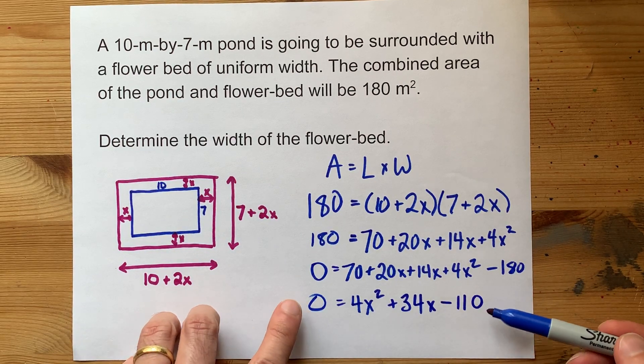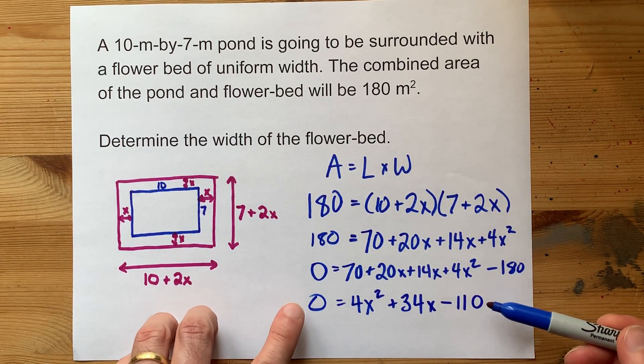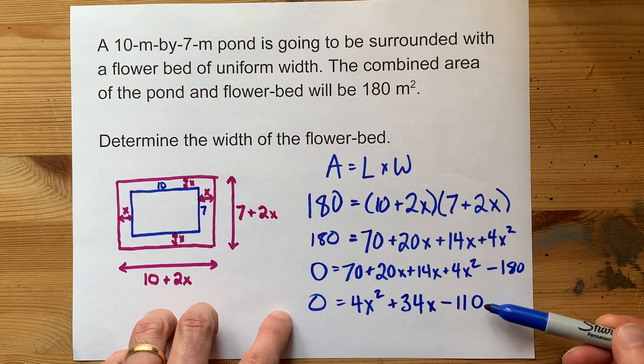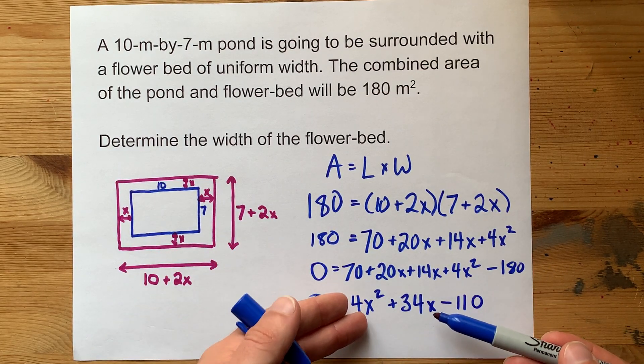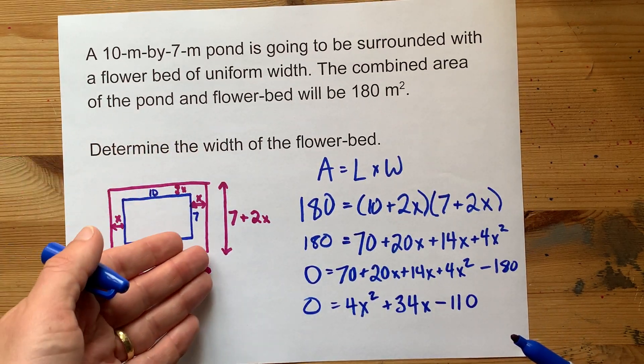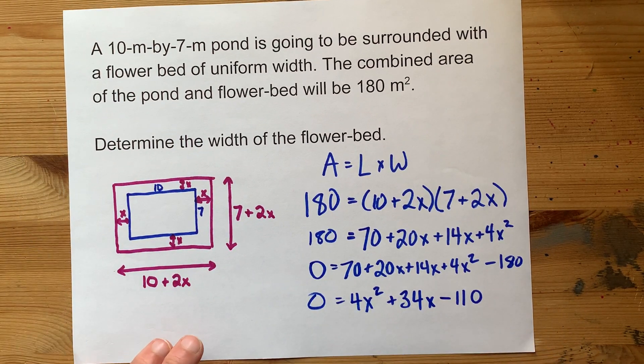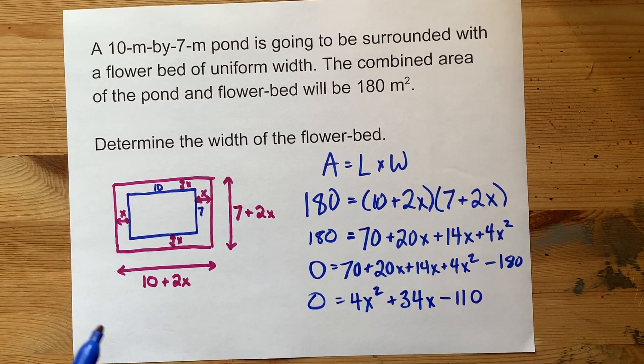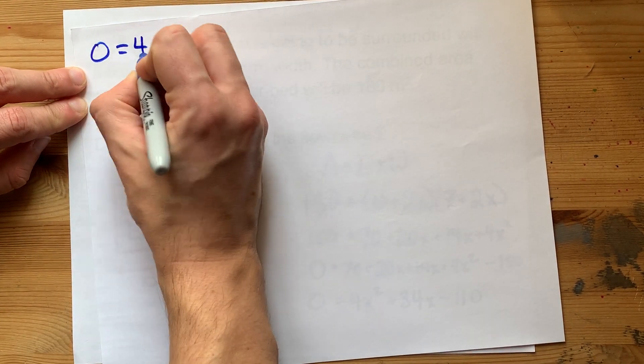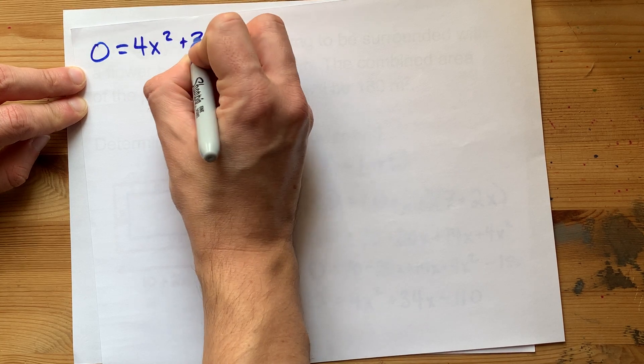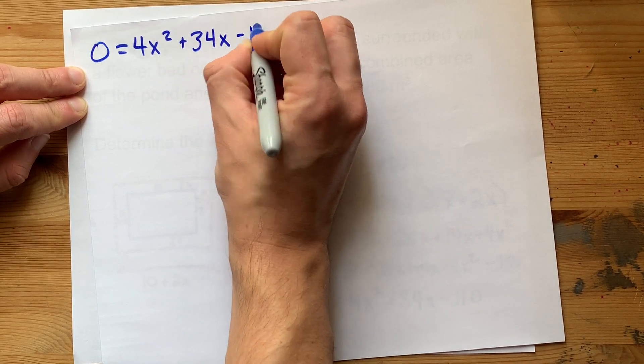So if I can solve for the values of X that satisfy this equation, then I've found the values of X that satisfy the problem's requirements. Now I'm going to need a bigger piece of paper here. I need to solve 0 equals 4X squared plus 34X minus 110.